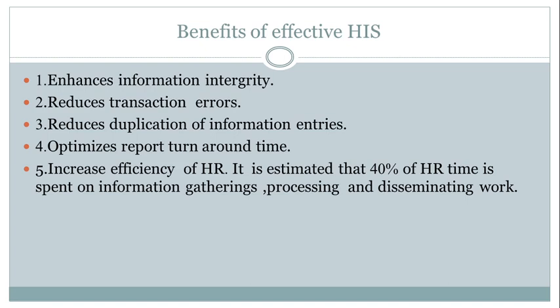Let's see what are the benefits of effective healthcare information systems. First, it enhances information integrity. Second, it reduces transaction errors. Third, it reduces duplication of information entries. Fourth, it optimizes report turnaround time. Fifth, it increases efficiency of human resources. It is estimated that 40% of human resource time is spent on information gathering, processing, and disseminating work, so an effective healthcare information system reduces this time.